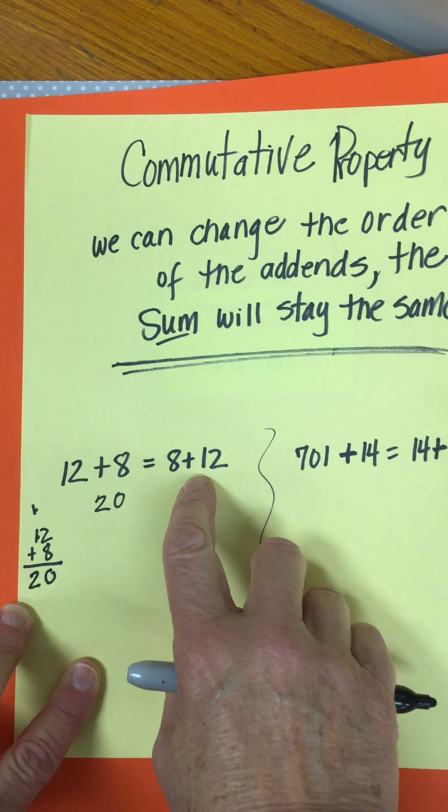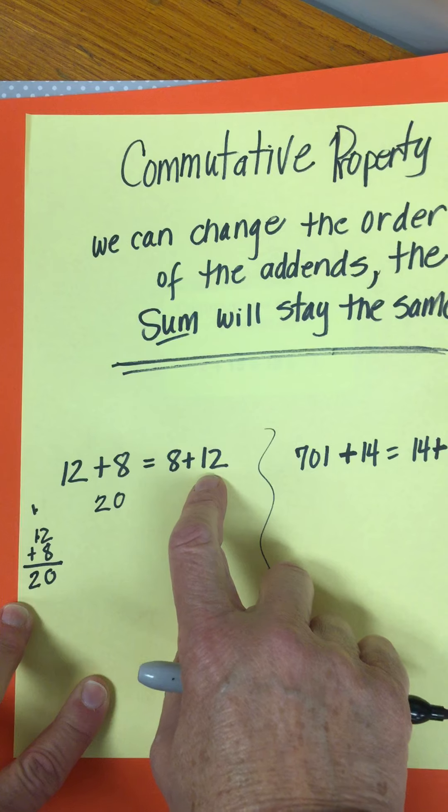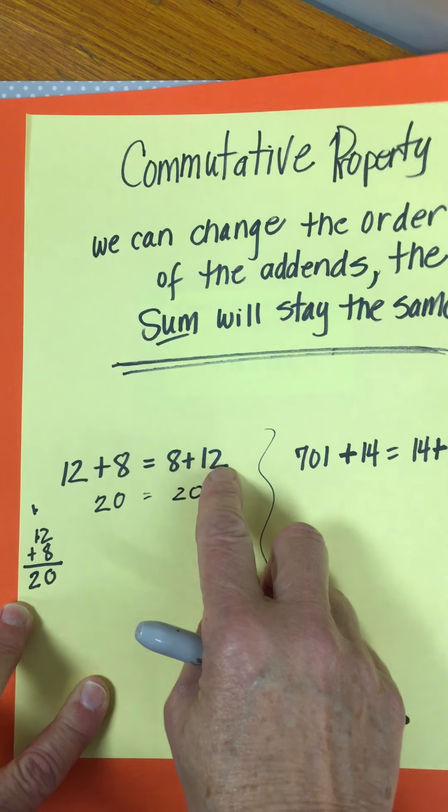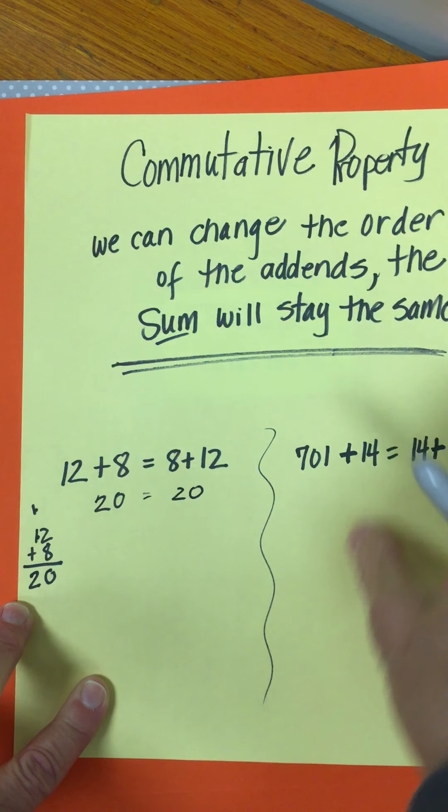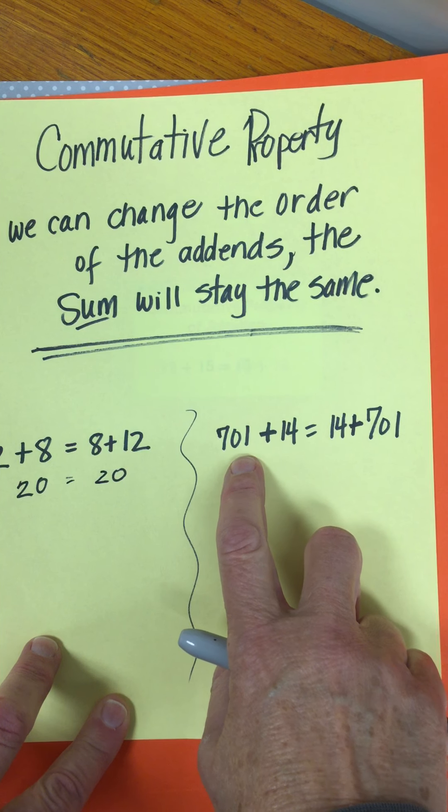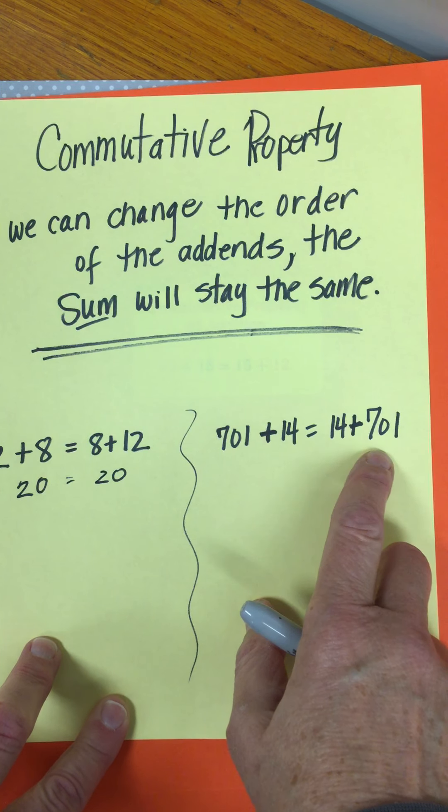Well all this is, all the other side is, is the numbers in the opposite order. So 20 equals 20. 8 plus 12. Okay, so the same thing would happen over here. 701 plus 14 has got to equal 14 plus 701.